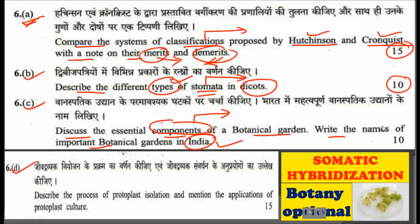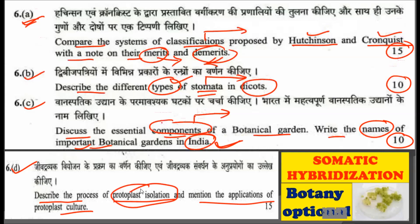Another sub-question asks you to name the important botanical gardens in India, for which you will get marks. There is also a sub-question on protoplast isolation. We have discussed this in our video on somatic hybridization — you should check that video to get the answer on how to isolate protoplasts. You should also mention the importance of protoplast culture.